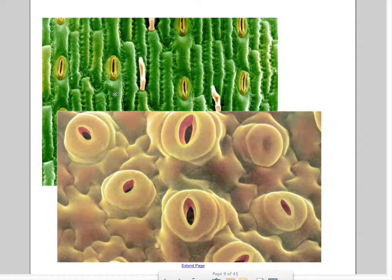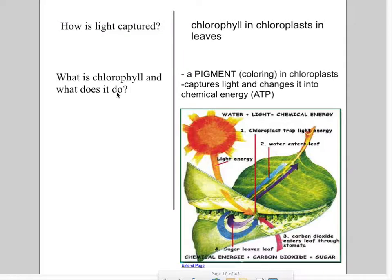Now, how is light captured? This is a great question. Chlorophyll, which is found in chloroplasts, which are found in leaves - so remember the picture that inside of the leaf there are many, many chloroplasts, which are these little factories that make photosynthesis happen. Chlorophyll is a pigment, a color that's inside chloroplasts.